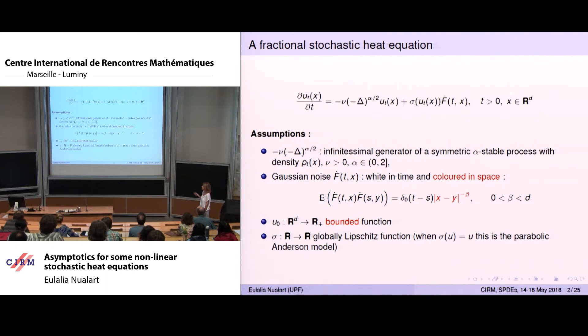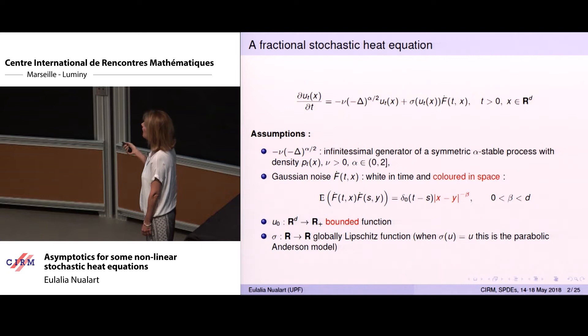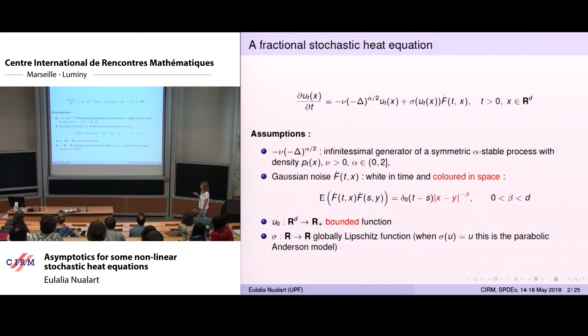To simplify, we assume that the correlation is given by the Riesz kernel with power beta, where beta is between 2 and d. Sigma, the multiplication, is a global Lipschitz function for the moment, and the particular case with sigma(u) equal to u, which is of particular interest, is called the parabolic Anderson model.